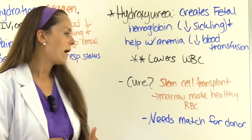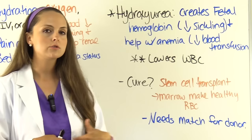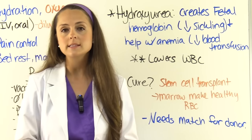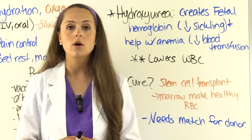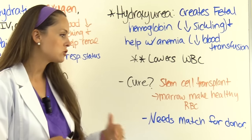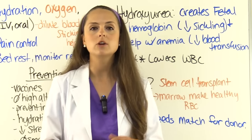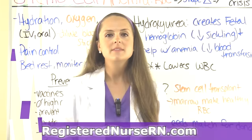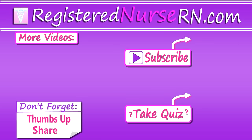Is there a cure for sickle cell anemia? A stem cell transplant can be performed where the bone marrow is made to produce new healthy red blood cells without the abnormal hemoglobin. However, it is rare because patients must be matched with a donor to have a successful transplant. That wraps up this lecture on sickle cell anemia — thank you for watching, don't forget to take the free quiz, and subscribe for more videos.